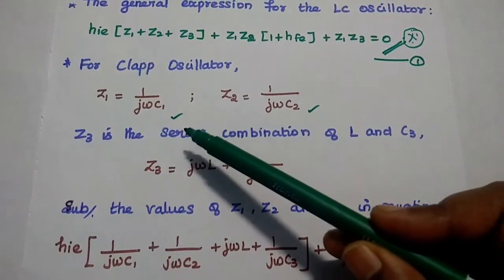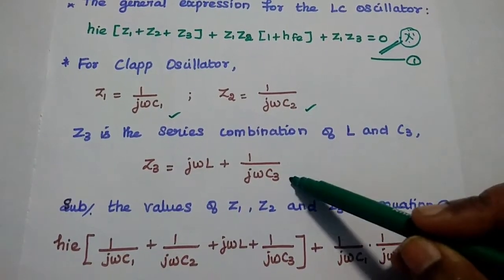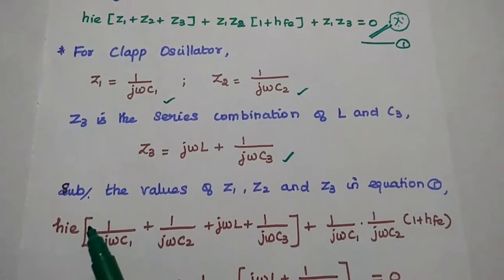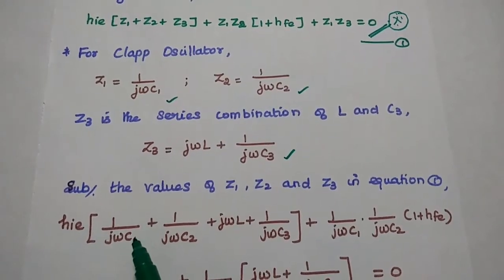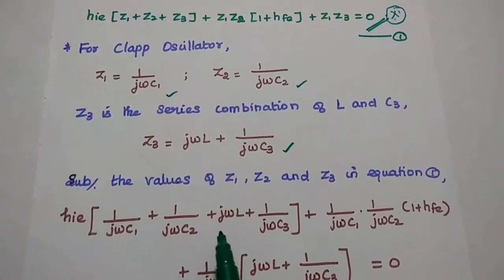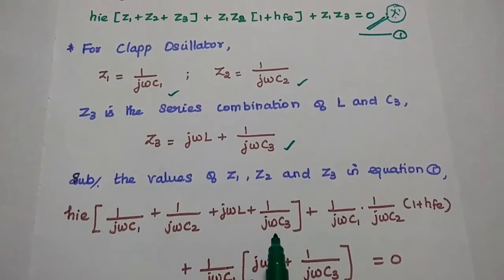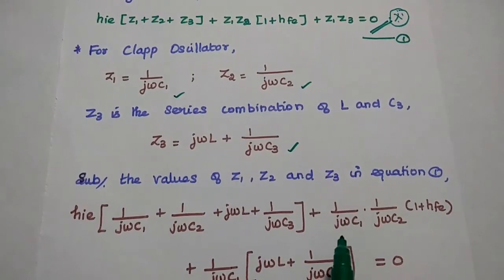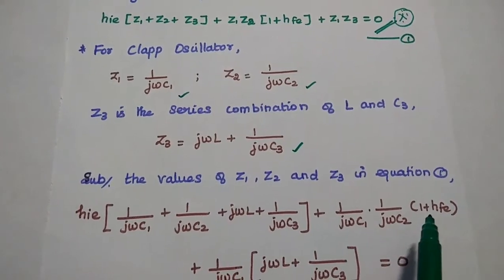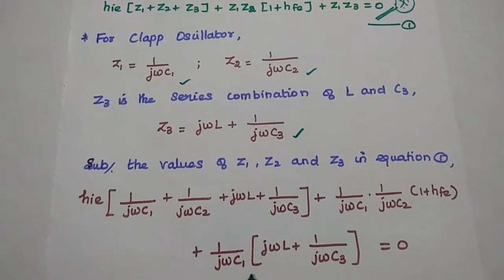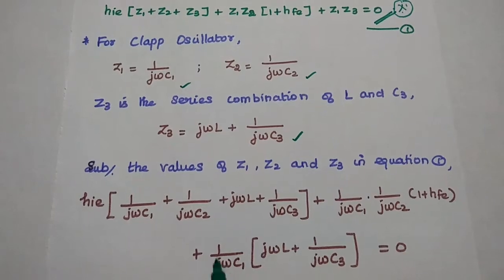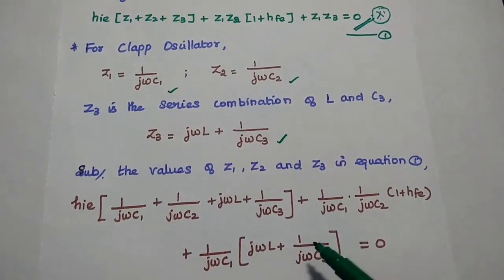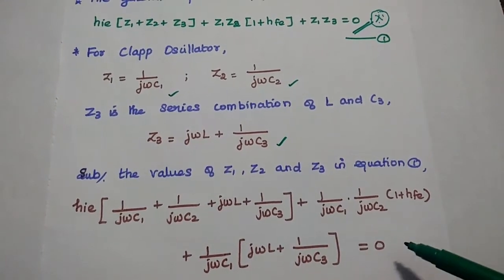Substituting Z1, Z2, and Z3 into the first equation: HIE·[1/(jωC1) + 1/(jωC2) + jωL + 1/(jωC3)] + [1/(jωC1)]·[1/(jωC2)]·(1 + HFE) + [1/(jωC1)]·[jωL + 1/(jωC3)] = 0.